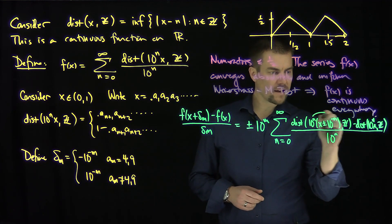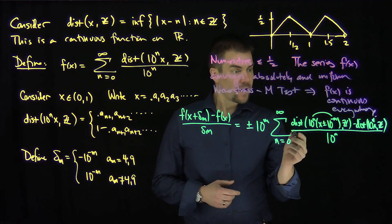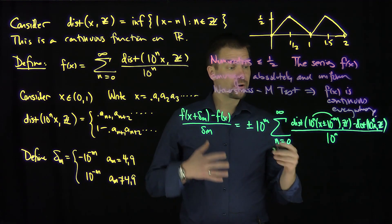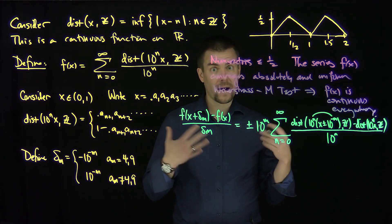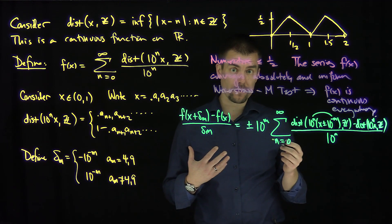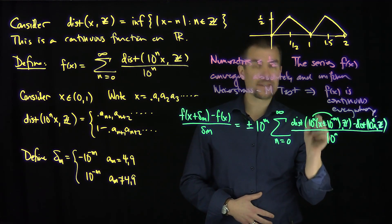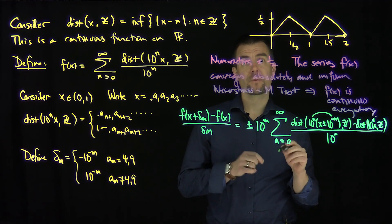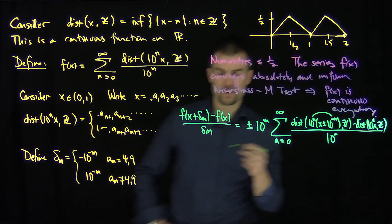Now, of course, what happens when n gets to the level m - then you're just shifting the x over by an integer. So this difference, the numerator will be equal to zero in this difference quotient as soon as n hits the level m. So everything in this series from m and beyond will zero out.